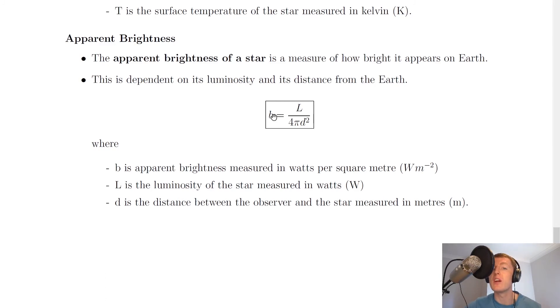Now it's also worth pointing out the inverse square relationship between the apparent brightness and the distance between the observer and the star. If we ignore the luminosity and the 4 pi for now, we have this b is proportional to 1 over d squared inverse square relationship. Just to help put this into context, I'm going to show you a few pictures here.